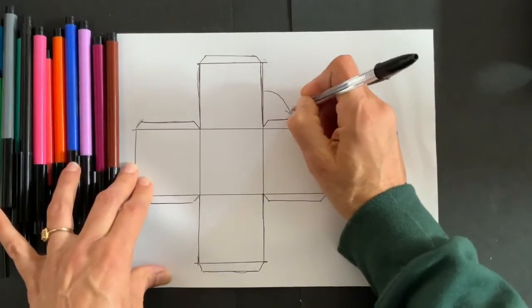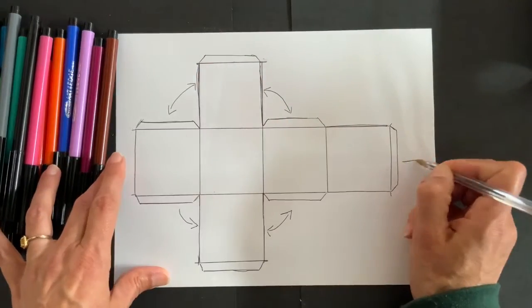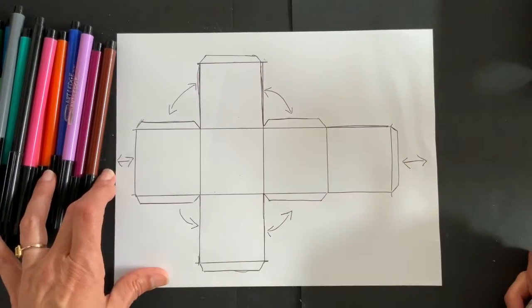Next, you might want to just make note of what side will fold to what side for your cube when you're done. This will help you kind of organize your doodles.